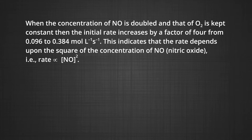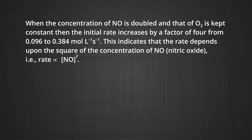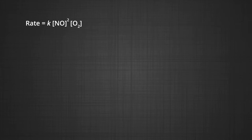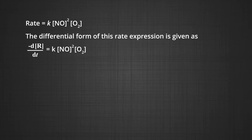This indicates that rate is directly proportional to [NO]². When the concentration of nitric oxide is kept constant and the concentration of oxygen is doubled, the rate also gets doubled, indicating that the rate depends on the concentration of oxygen to the first power, i.e., rate is directly proportional to [O2]. The square brackets represent the concentration. Hence, the rate equation for this reaction is: rate = k[NO]²[O2]¹. The differential form is: −d[R]/dt = k[NO]²[O2].